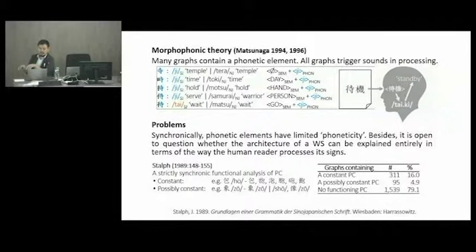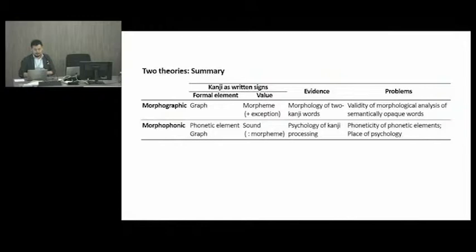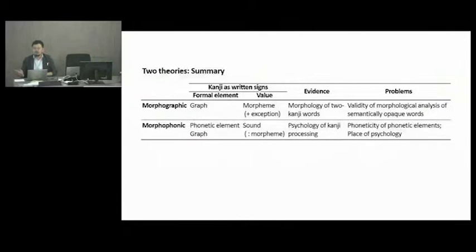Besides, it is open to question whether the architecture of a writing system can be explained entirely in terms of the way the human reader processes its signs. There is a study conducted by Stauf which argues that the phoneticity of these phonetic elements is quite limited in today's Japanese. The question about the psychology remains an open one. To sum up, both theories have their pros and cons: yes, many kanji graphs do correspond to morphemes; yes, many graphs do represent sounds; however, both theories suffer from the problem of defining what constitutes exceptions and what constitutes the main thing.